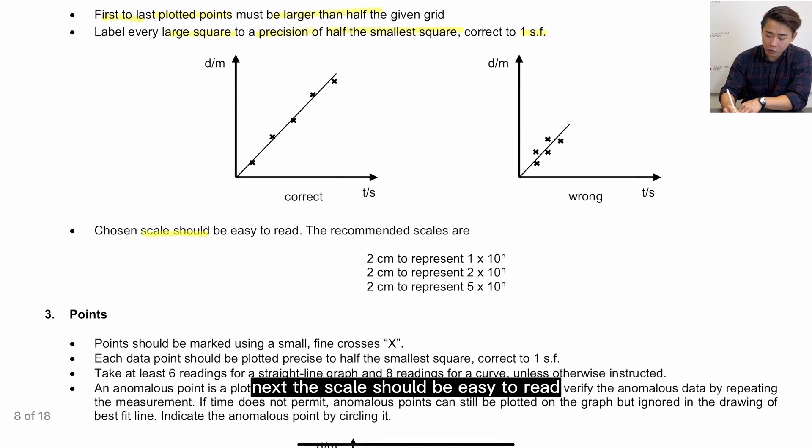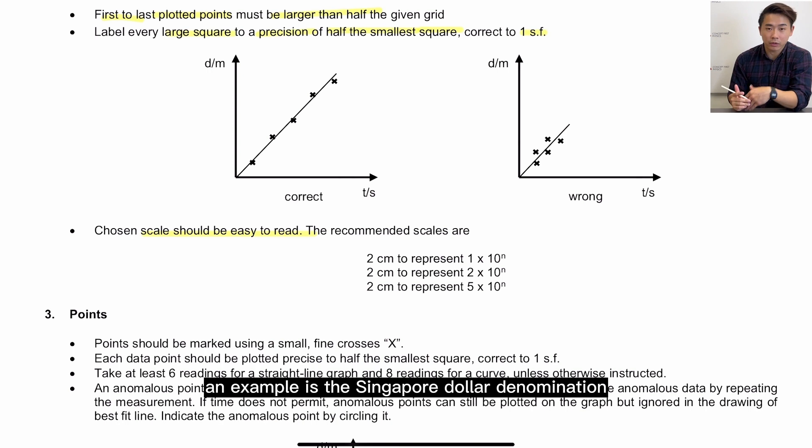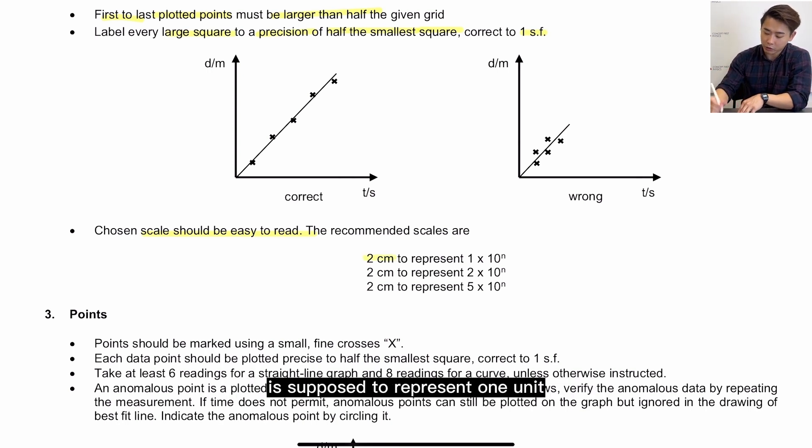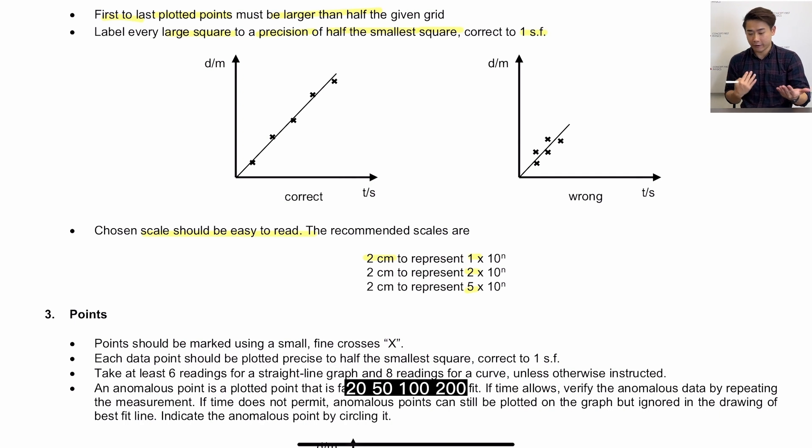Next, the scale should be easy to read. An example is the Singapore dollar denomination. So every 2 cm or every big square is supposed to represent 1 unit, 2 units, 5 units. Of course it can also represent 10, 20, 50, 100, 200, 500, and so on.